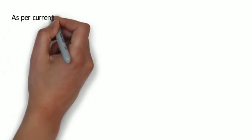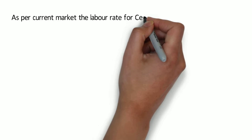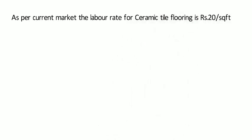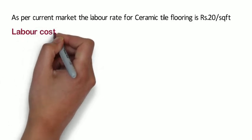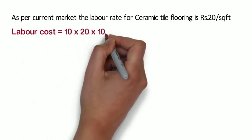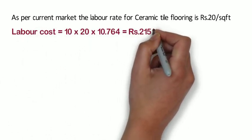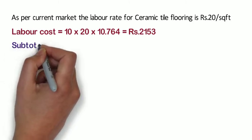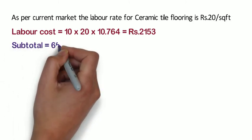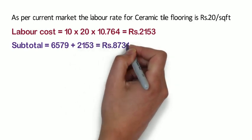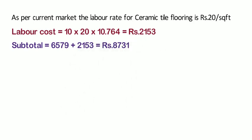As per current market rate, the labor rate for ceramic tile flooring is 20 rupees per square feet. Hence for 10 square meter, the labor cost shall be 10 x 20 x 10.764 = 2,153 rupees. The subtotal is 6,579 + 2,153 = 8,731 rupees.